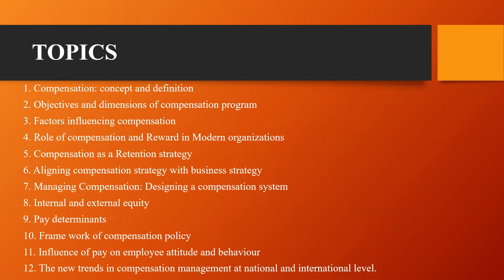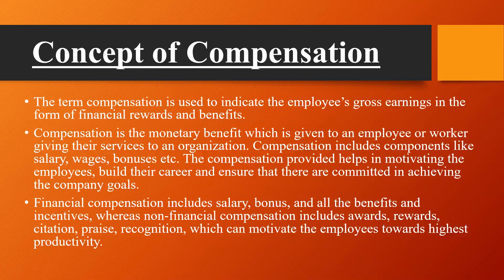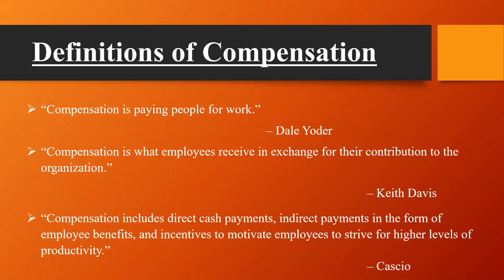So these are all the dimensions of compensation. To recap Unit 4: the concept of compensation — according to Dale Yoder, compensation is paying people for work; according to Keith Davis, compensation is what employees receive in exchange for their contribution to the organization; and according to Cascio, compensation includes direct cash payment, indirect payment in the form of employee benefits, and incentives to motivate employees to strive for the highest productivity.